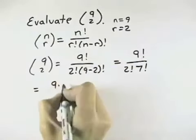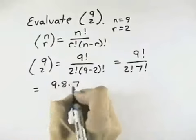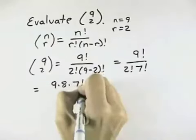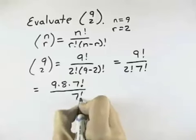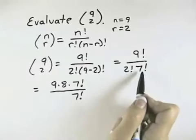Counting down from the 9, we know this is 9 times 8 times 7, and everything smaller than 7, we can leave it as 7 factorial. The reason I'm leaving that as 7 factorial is because it will cancel with the 7 factorial in the denominator.